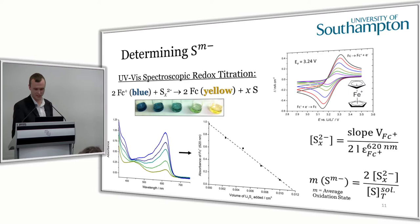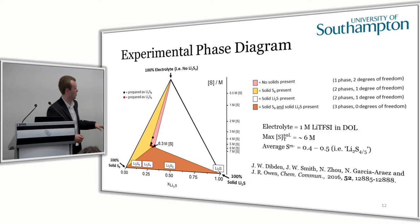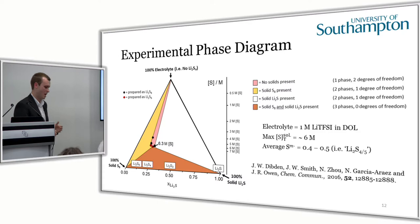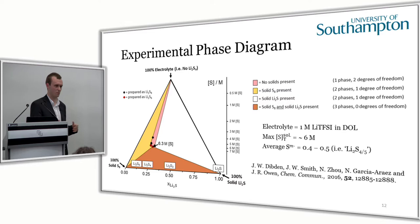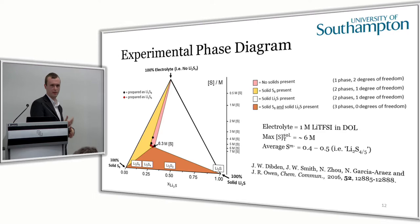Using these two techniques to analyze very concentrated solutions, we designed an experimental ternary phase diagram. Shown here are some of the very concentrated solutions analyzed — prepared as Li2S8 or Li2S6 at 10 molar and 20 molar — to reach the congruent point. Our electrolyte was 1 M LiTFSI in dioxolane, used as a model electrolyte since most people use this with either DME or TEG-DME. A maximum total sulfur concentration of 6 molar was found, and the average oxidation state was 0.4 to 0.5 minus, approximately Li2S4 to Li2S5 in terms of average chain length.